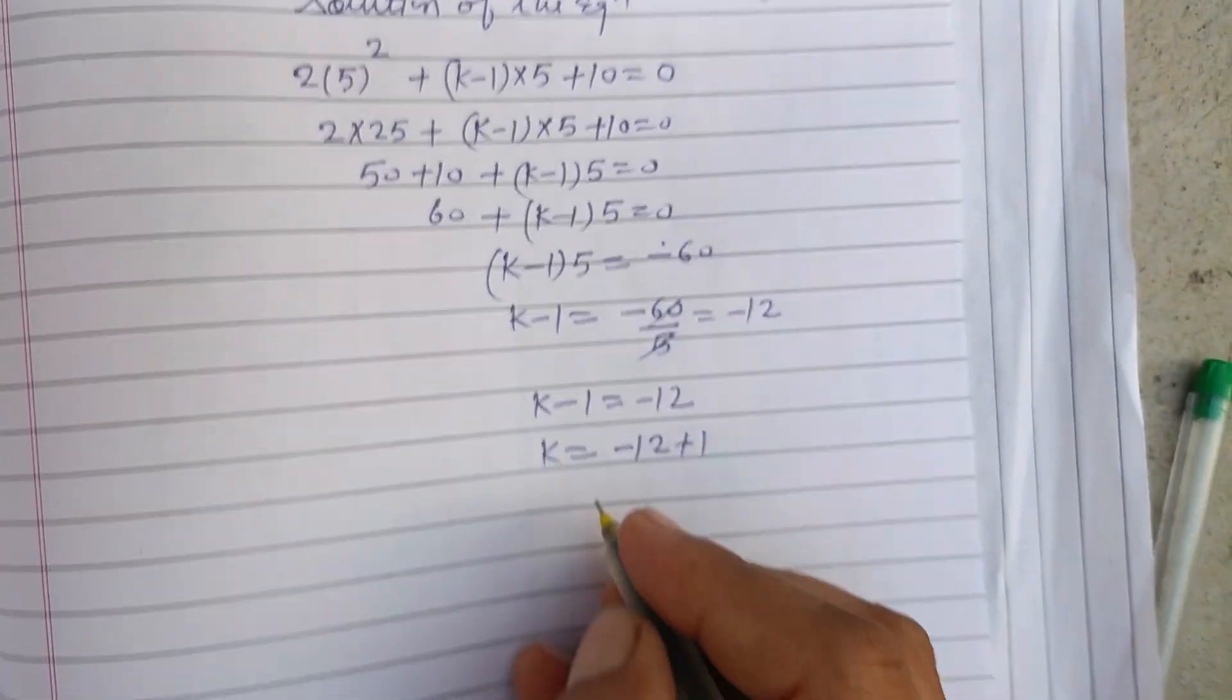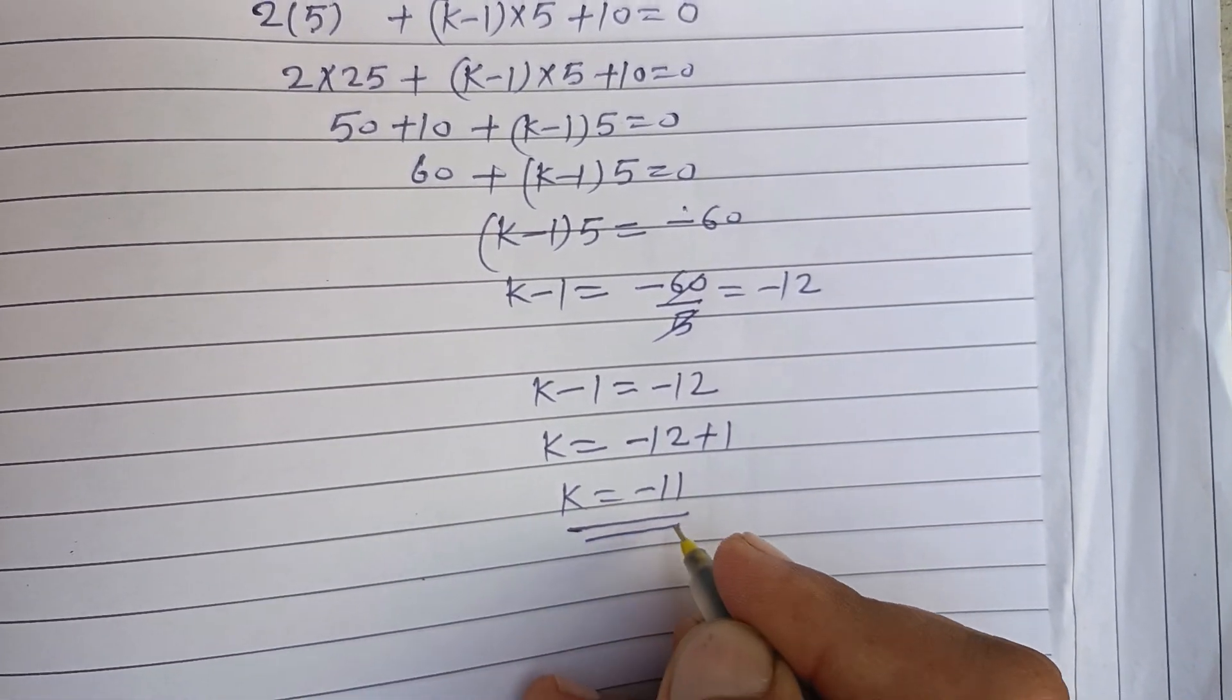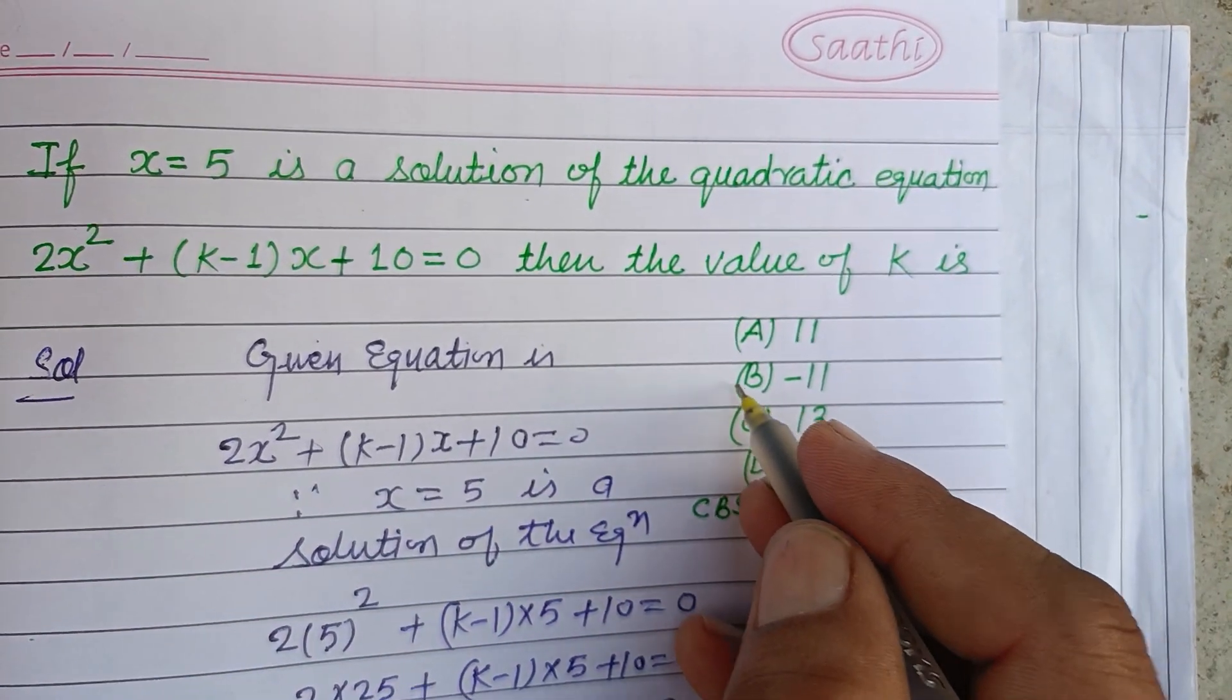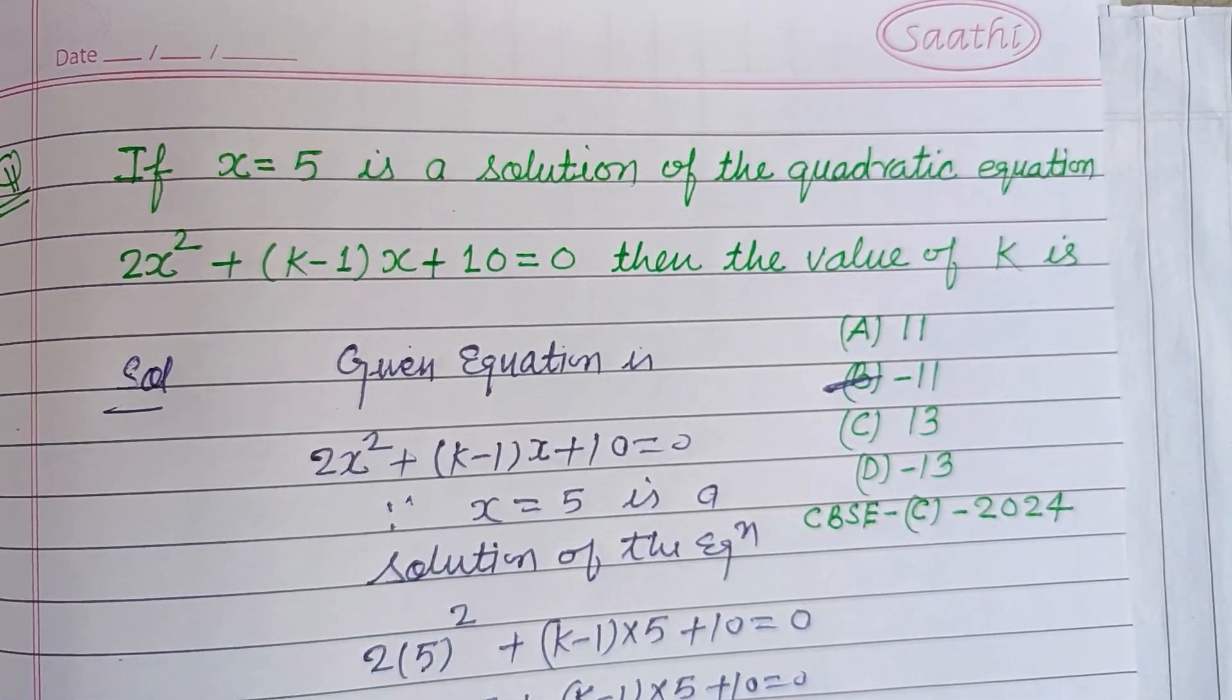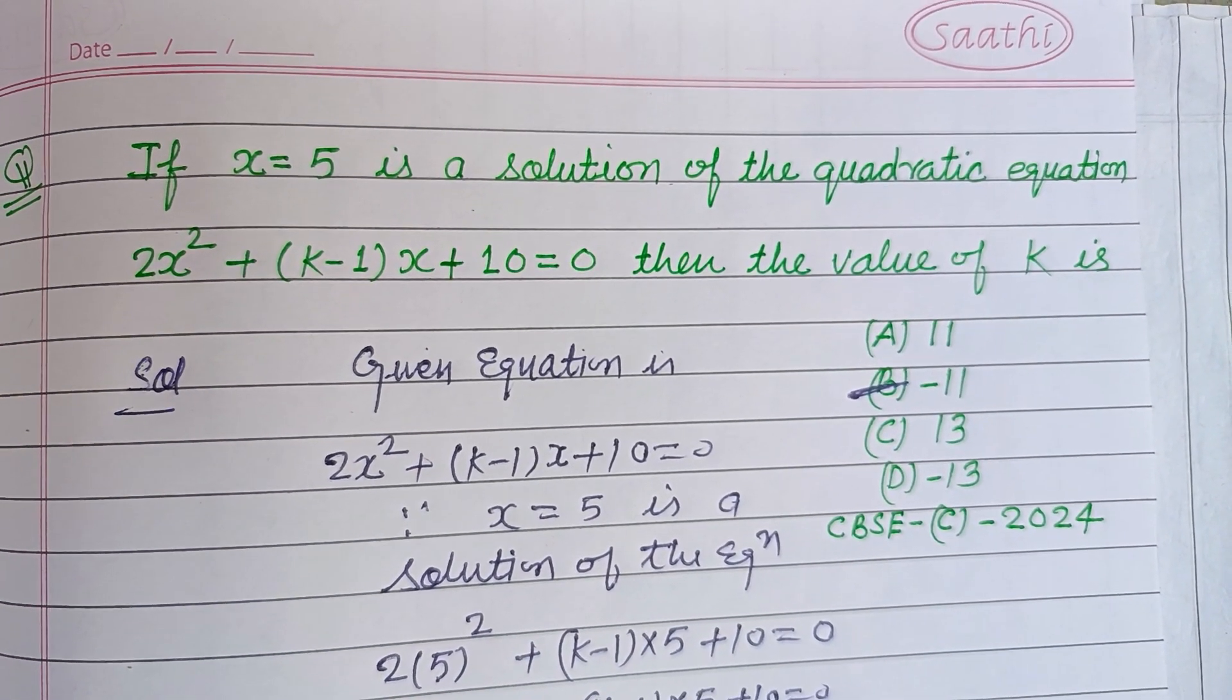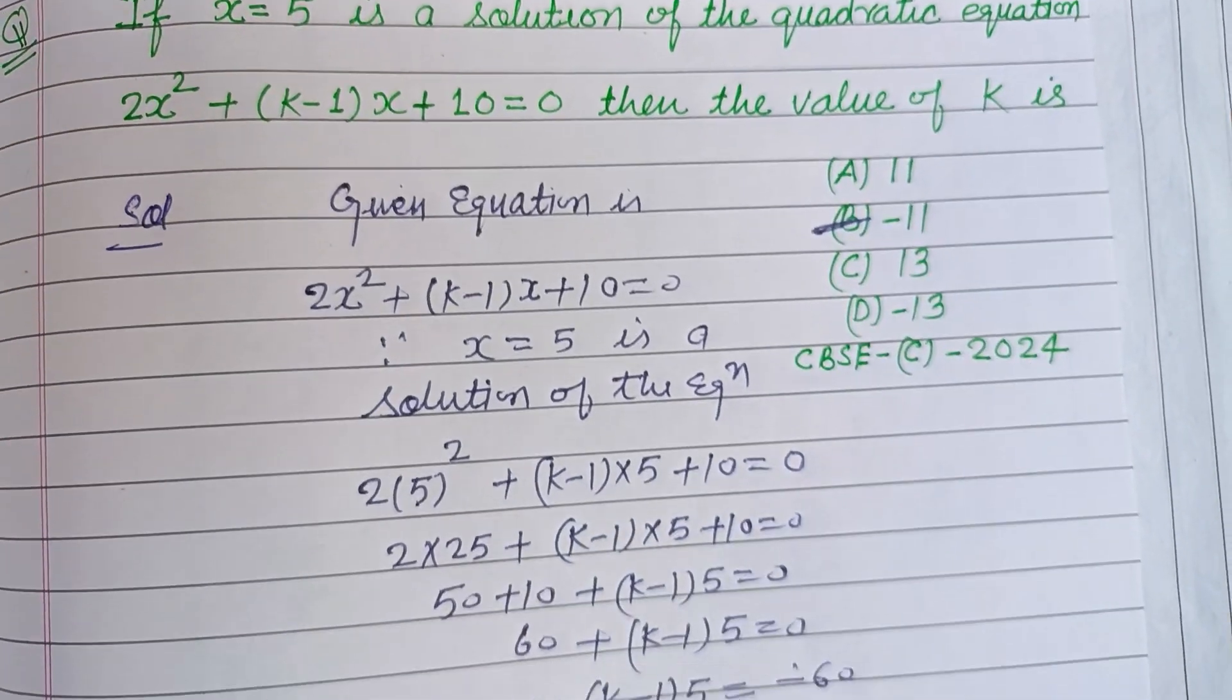So the value of k is -11, which is found in option B. So option B is correct. I hope you got it. Please like the video, subscribe the channel, thanks for watching.